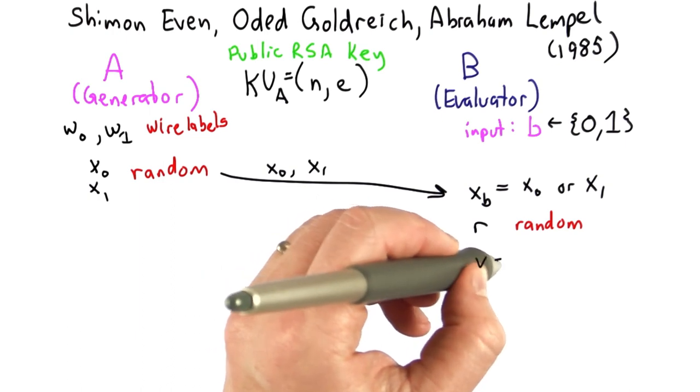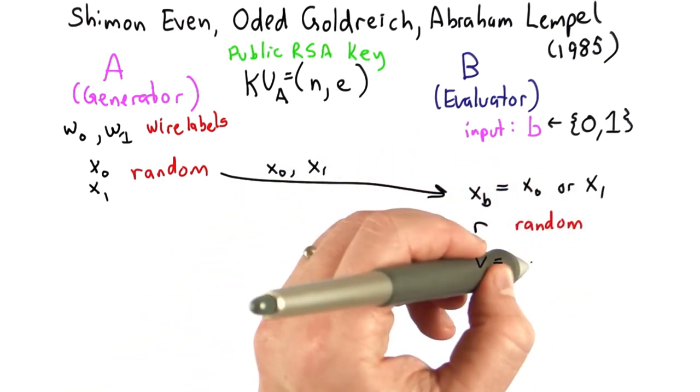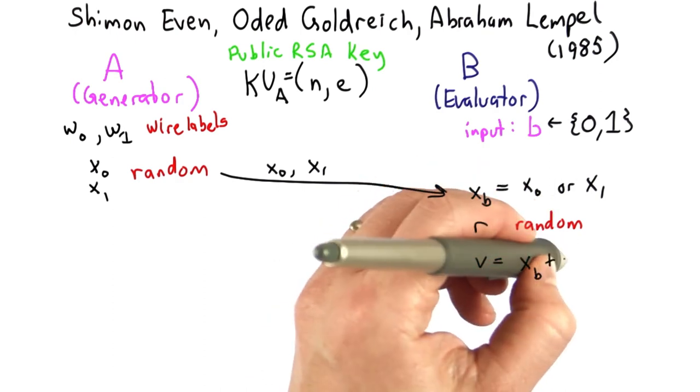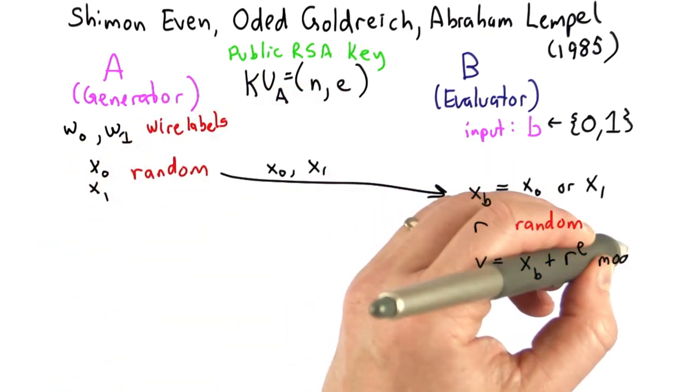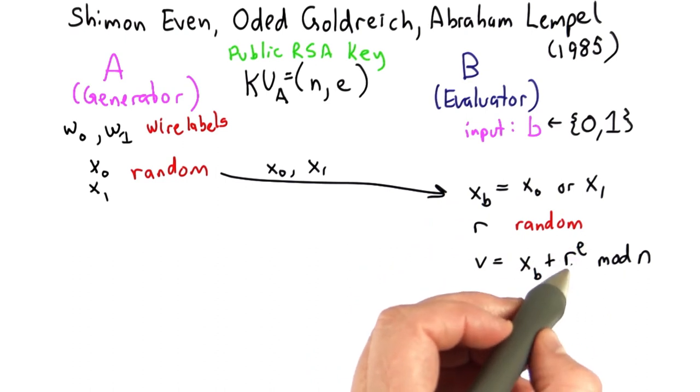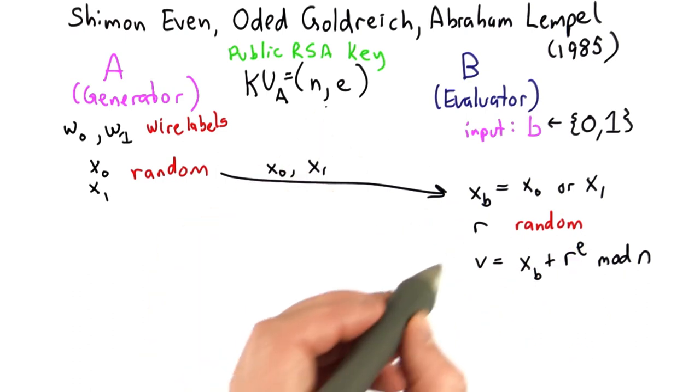And so he'll compute this new value, which is the value of x that he selected, plus the random value raised to the public exponent, mod n. So we're going to hide the value of xb by adding a random value raised to the e power to it.